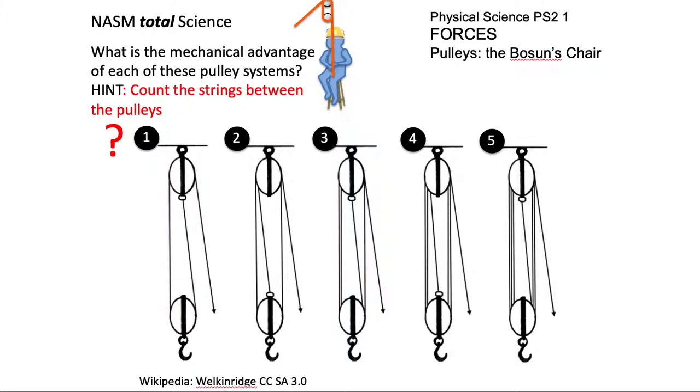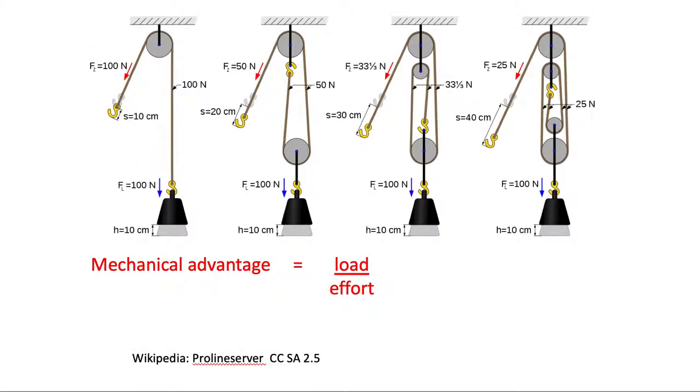So count the number of strings and there you have your answers. And you can answer those. And here's a number of questions. We're just going to go through one of these examples that's here. But mechanical advantage, it equals the number of strings between pulleys. It also equals the load, what you're lifting, divided by the effort, the pull that is being applied to the single rope to lift the load.